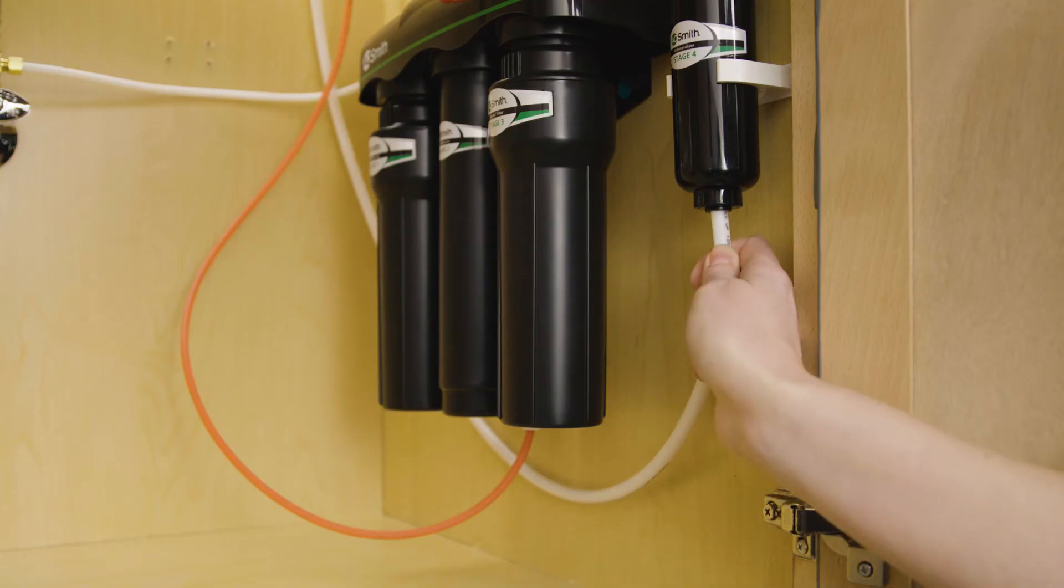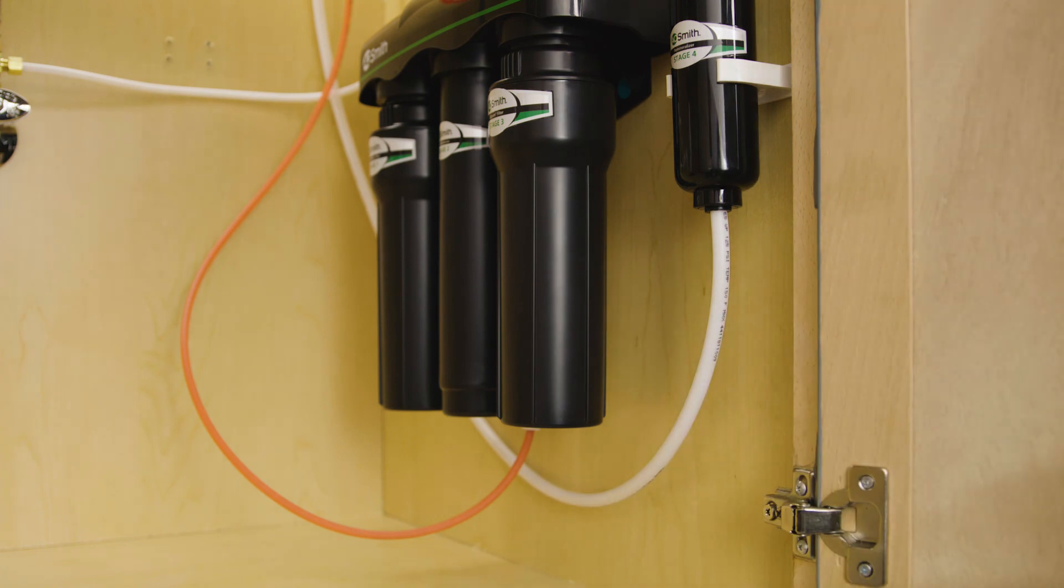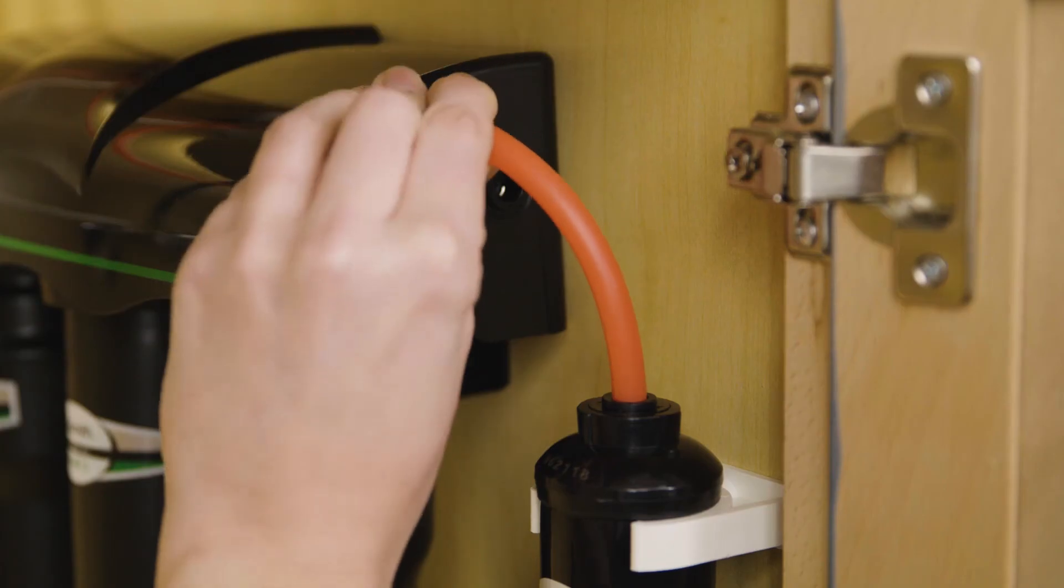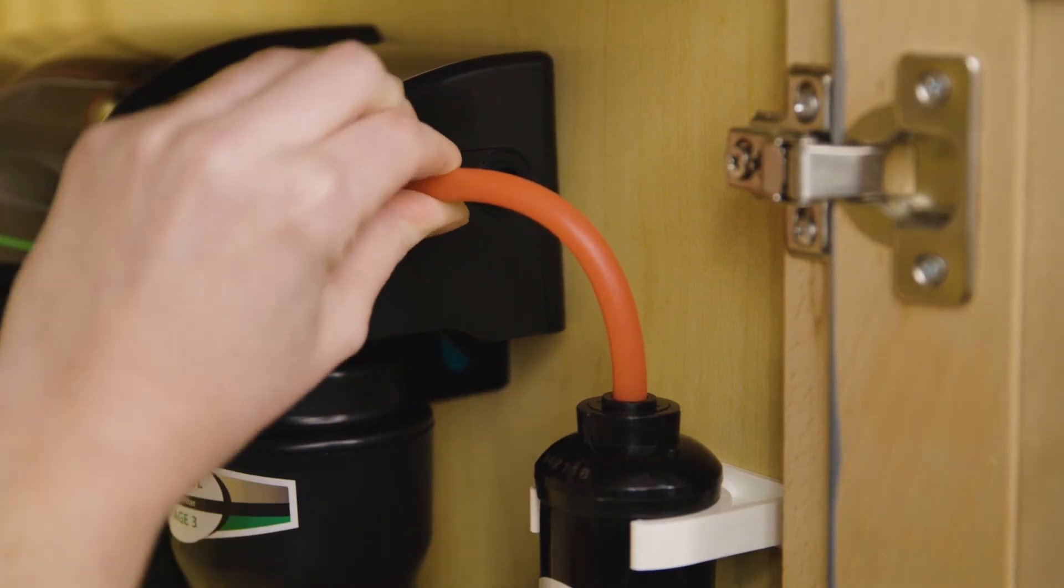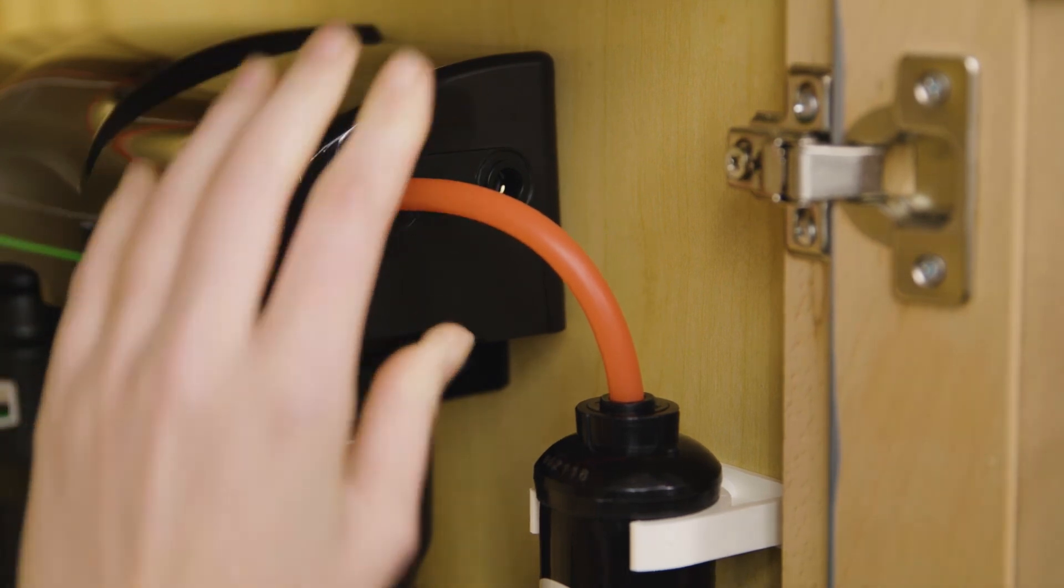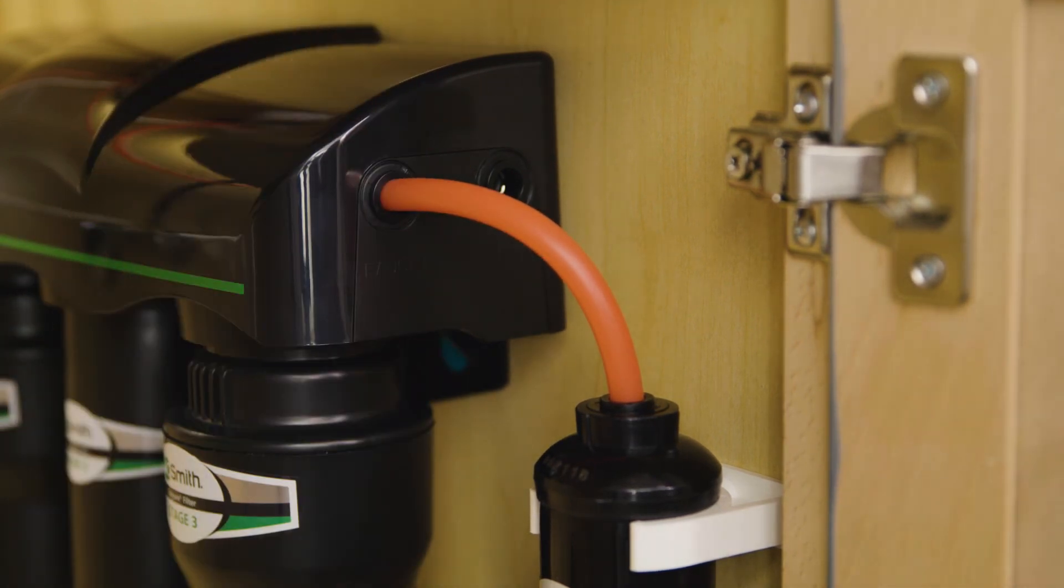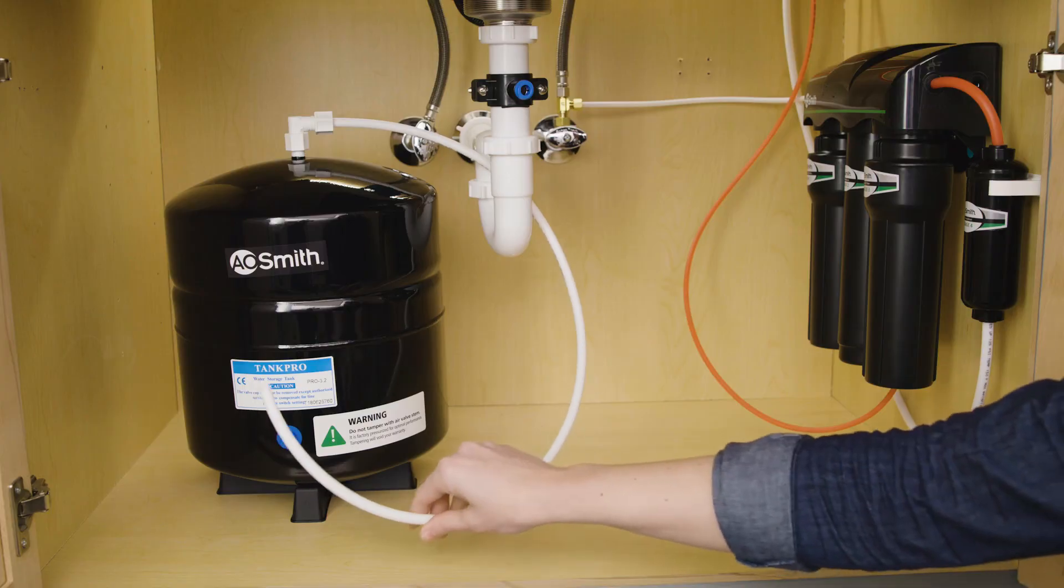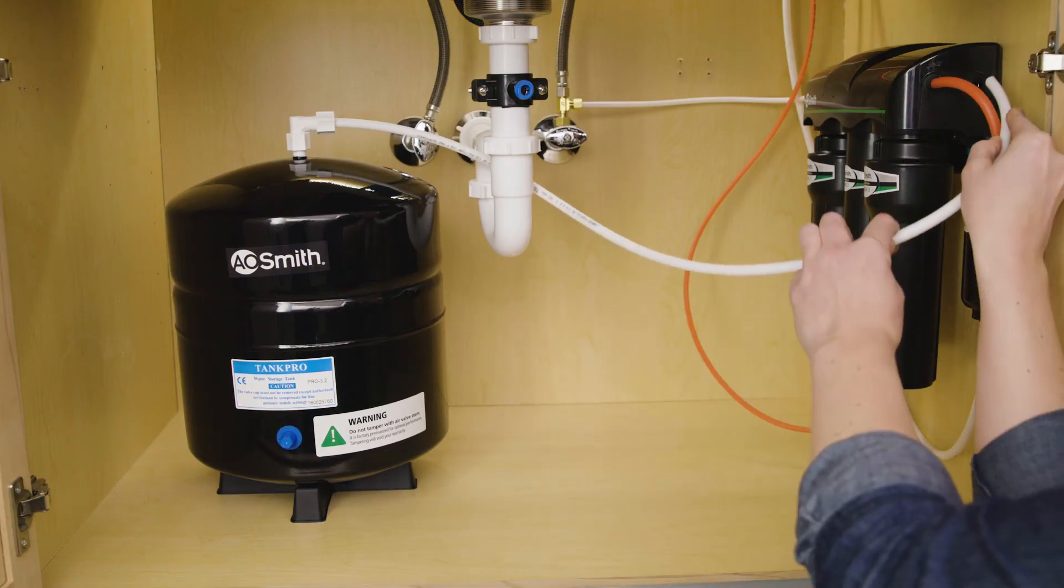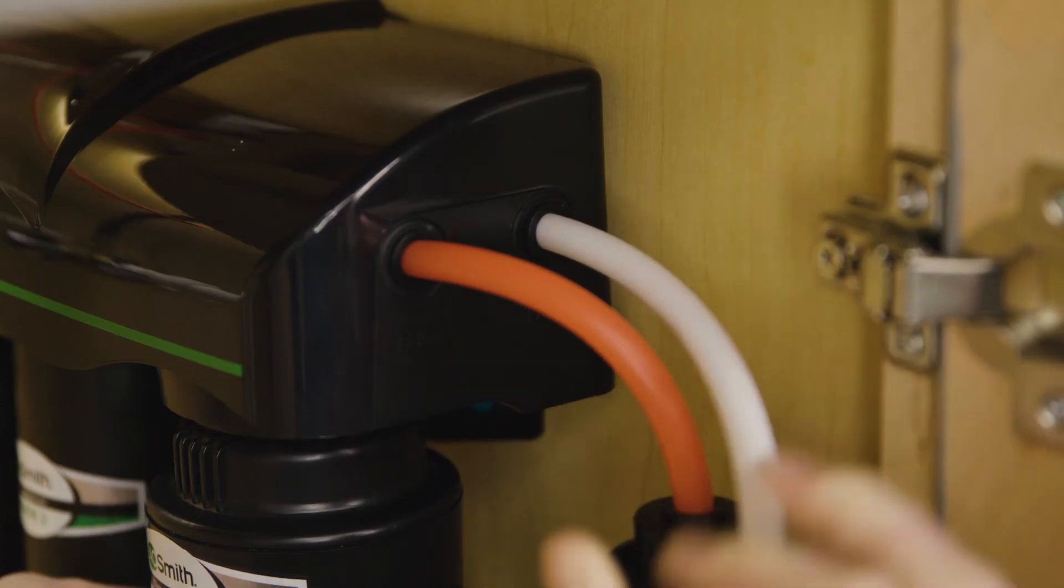Insert the three-eighth inch white tubing from the faucet onto the remineralizer port labeled outlet. Then with three-eighth inch red tubing, insert one end into the manifold port labeled faucet and the other end into the remineralizer port labeled inlet. Take the three-eighth inch white tubing from the storage tank and insert it into the manifold port labeled tank.